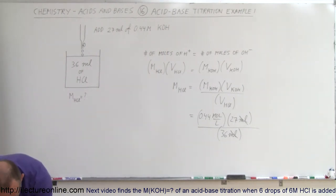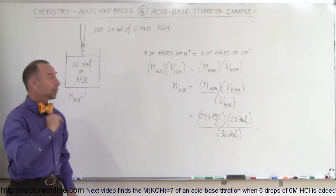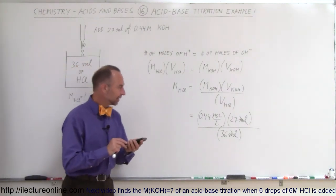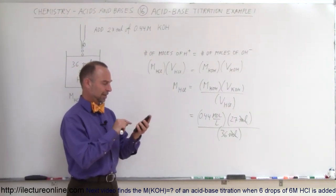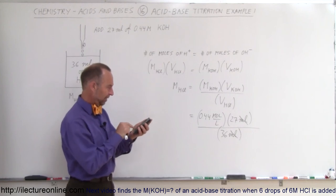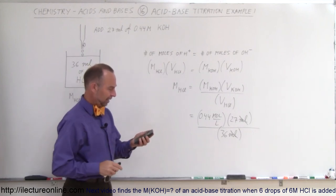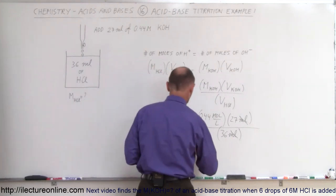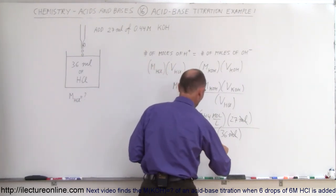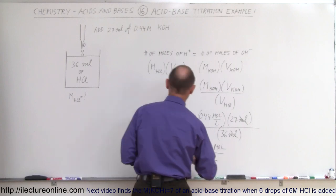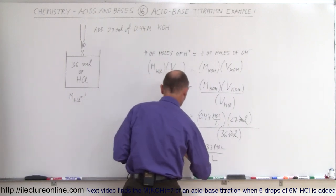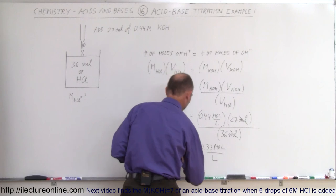Let me bring my calculator. So: 0.44 times 27 divided by 36 equals 0.33. This is equal to 0.33 moles per liter — that would be the concentration of the hydrochloric acid that we started with.